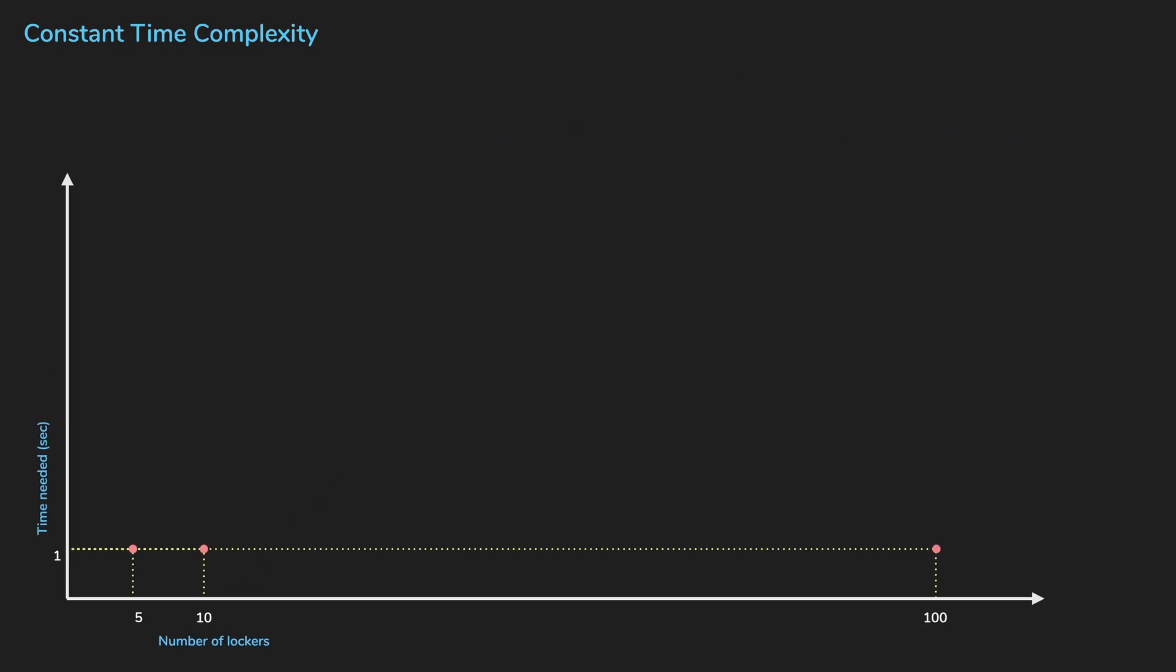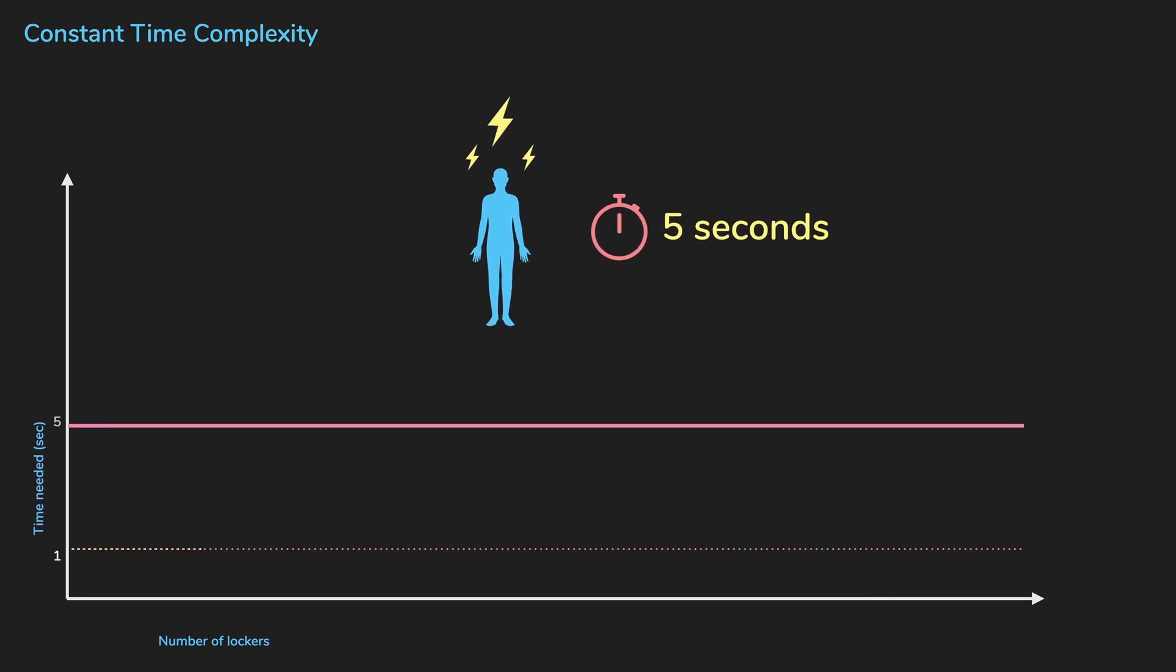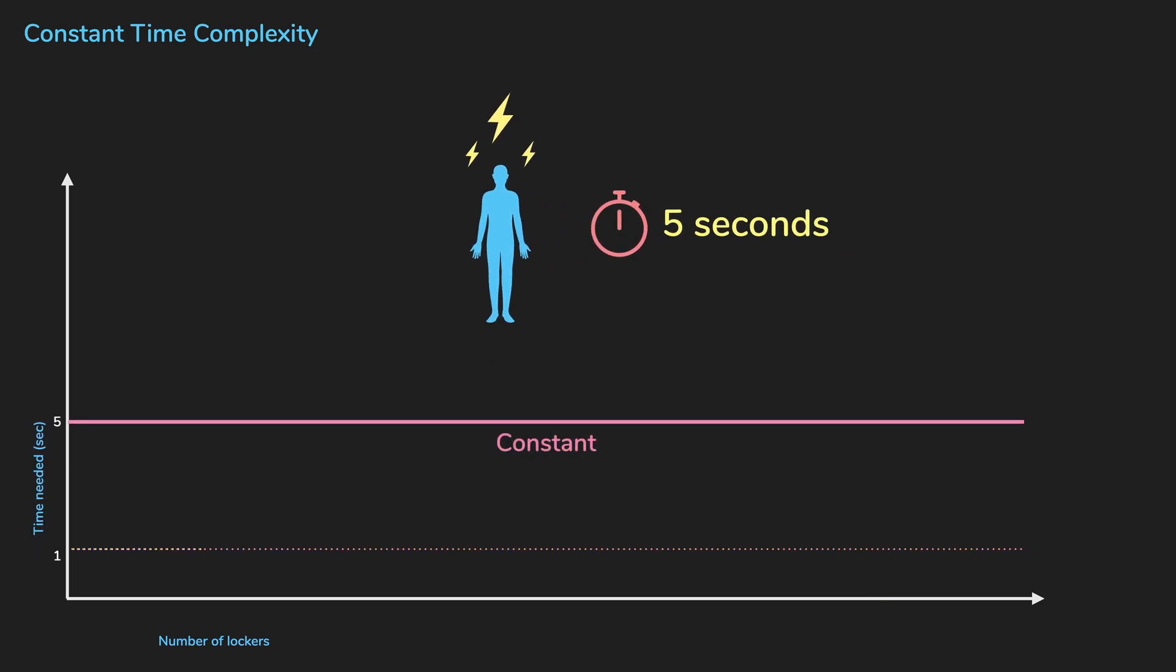Let's say our psychic friend can guess the locker correctly, but it takes five seconds to use their powers. It might be slower than the one second algorithm, but it's still considered constant time.